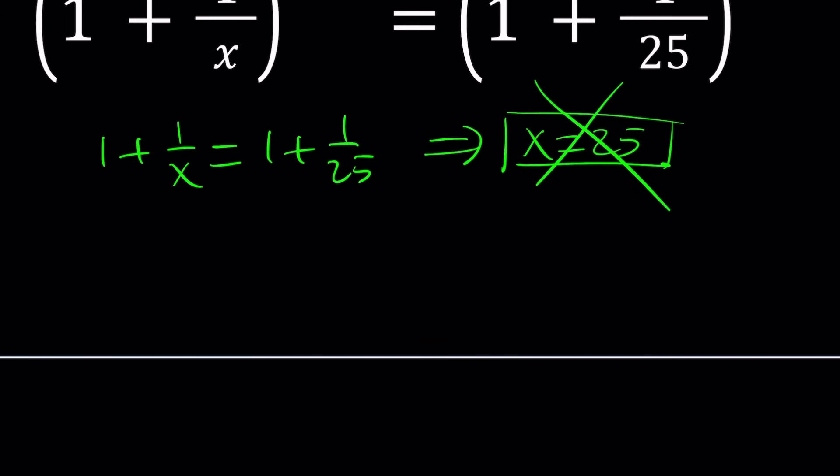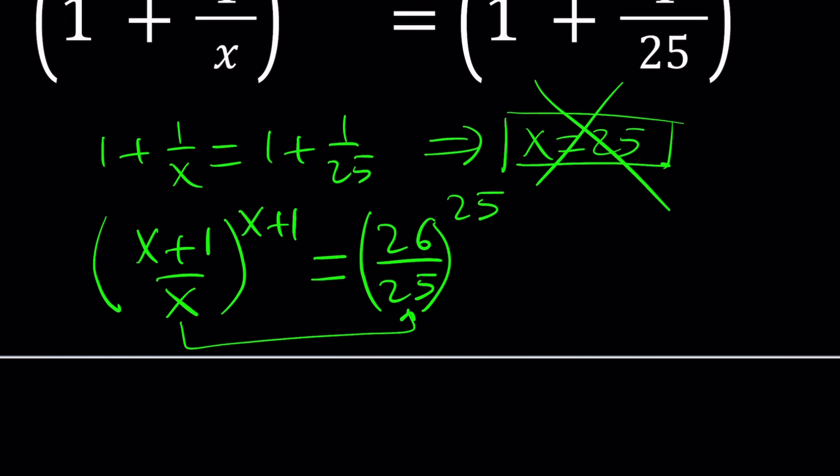So now, let's go ahead and make a common denominator. And then do the same thing on the right-hand side. And again, if you make that comparison, it's not going to work, because if x is 25, x plus 1 needs to be 25, but that's not the case.